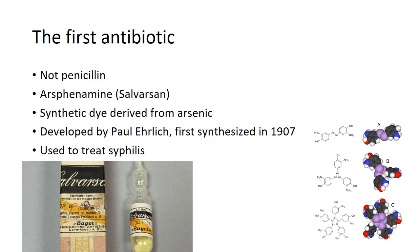Now that we understand bacteria and the impact infections can have, we can talk about antibiotics — drugs that destroy or disable bacteria in the body to treat infections. Up until the early 1900s, there were no antibiotics to treat bacterial infections. A common misconception is that penicillin was the first antibiotic, but it was actually not — it was the more famous discovery, but not the first one created.